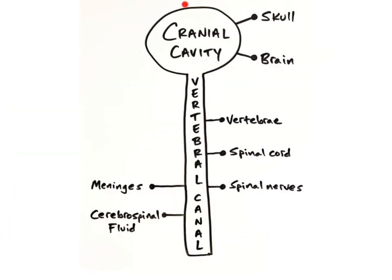The cranial cavity is formed by the cranial bones of the skull and contains the brain. Continuous with the cranial cavity is the vertebral or spinal canal. It is formed by the bones of the vertebral column, the vertebrae, making up the backbone, and contains the spinal cord and the beginnings of the spinal nerves. The brain and spinal cord are surrounded and protected by three membranes called the meninges and a shock-absorbing fluid called the cerebrospinal fluid.